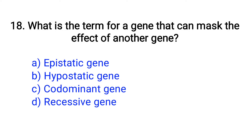Question number 18. What is the term for a gene that can mask the effect of another gene? Option A: Epistatic gene, B: Hypostatic gene, C: Codominance gene, D: Recessive gene. The right answer is Option A: Epistatic gene.